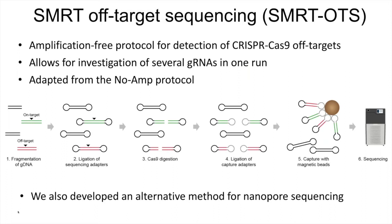What we are doing is called Smart Off-Target Sequencing, which is very similar to the approach I showed before — a continuation of that project. It's an amplification-free protocol for detection of CRISPR-Cas9 off-targets. We can also do multiplexing of several guide RNAs in one single run. It's adapted from the no-amp protocol. The only major difference is that we start from DNA that has been randomly fragmented instead of using restriction enzymes. We have the SMRTbell adapters, then digest these with Cas9, ligate adapters, and do sequencing. We have also developed an alternative approach using nanopore sequencing, so we can compare between these two different approaches.